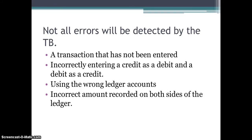You may also record an incorrect amount on both sides. For example, if a capital contribution was $20,000 but you debited $10,000 and credited $10,000, your trial balance will still balance and will not pick up that type of error.